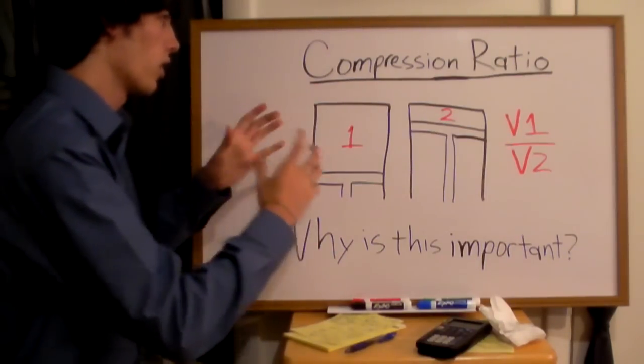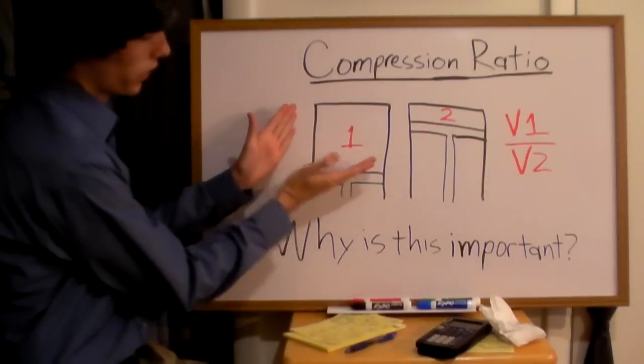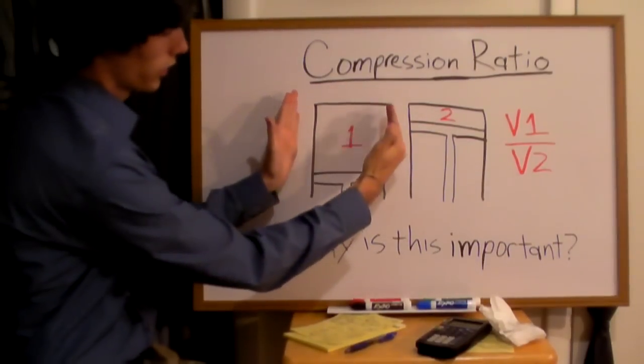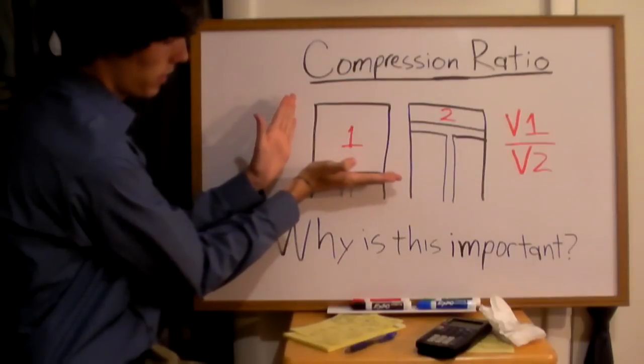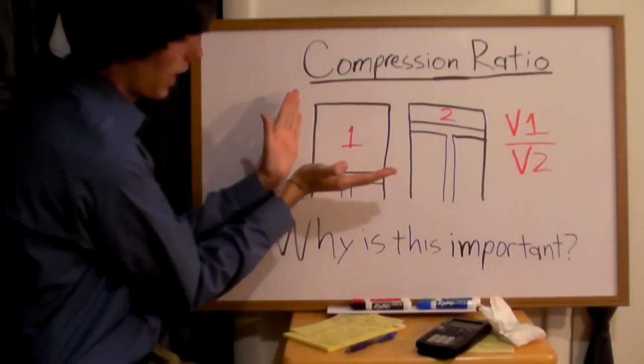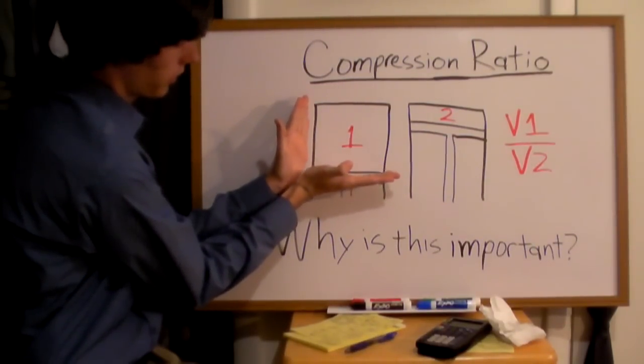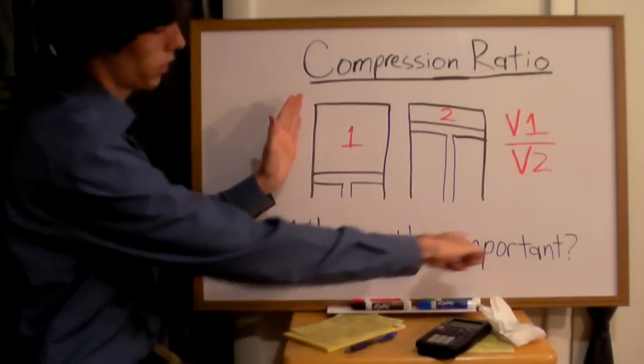Compression ratio is a ratio of the volumes when the cylinder, you've got a cylinder here inside your engine. The piston is down at the bottom and this is the lowest point the piston is ever going to go down rotating the crankshaft.